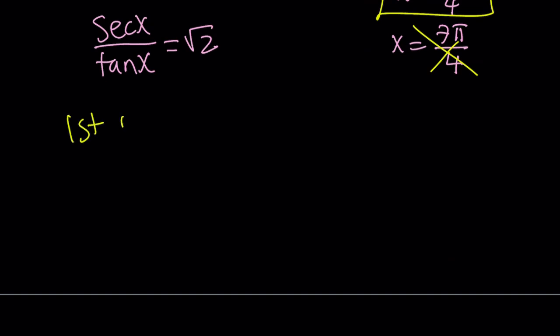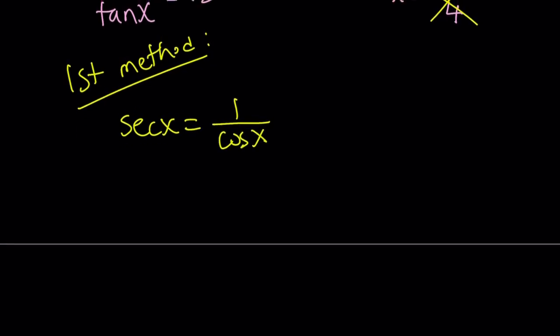Okay, let's go ahead and take a look at the first method. So I kind of like the first method a little better because it avoids extraneous solutions. And the reason for that is we're not squaring both sides. So secant is 1 over cosine, and as you should know, tangent can be written as sine over cosine.